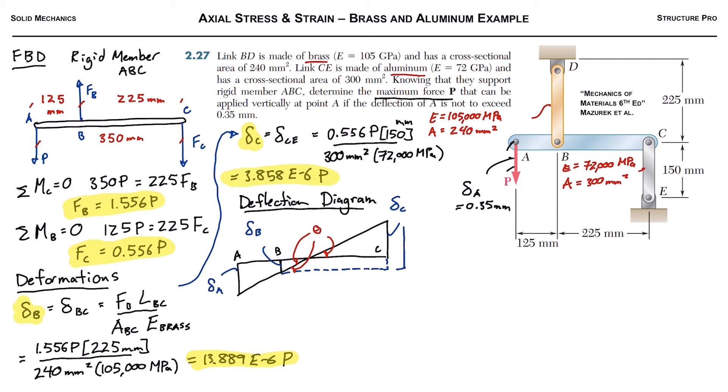So here on the right side, the right side of this triangle is the deflection at C plus the deflection at B. And we're going to make use of small angle theorem. So small angle theorem says that the sine of a small angle is equal to that small angle. So we can say that theta equals the opposite over the adjacent. So the delta C plus the delta B divided by this length right here. And that's the length from B to C, which we look up in the figure. It's 225 millimeters.